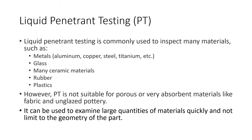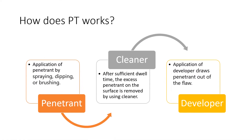It can be used to examine large quantities of materials quickly and is not limited to the geometry of the part. Now let's have a look at how liquid penetrant testing works. There are three main components needed: penetrant, cleaner, and developer. The first step involves the application of penetrant by spraying, dipping, or brushing.